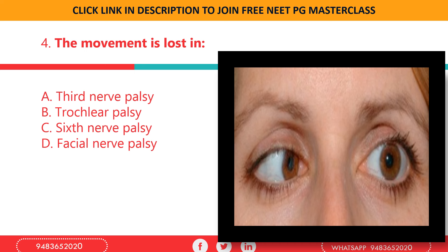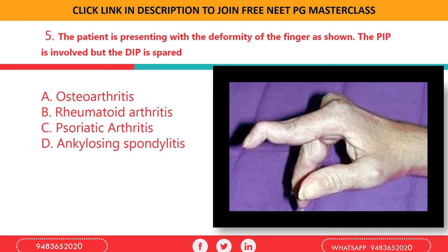The patient is presenting with deformity of the finger as shown. The proximal interphalangeal joint is involved but the distal interphalangeal joint is spared. The condition is seen in: a) osteoarthritis, b) rheumatoid arthritis, c) psoriatic arthritis, d) ankylosing spondylitis.